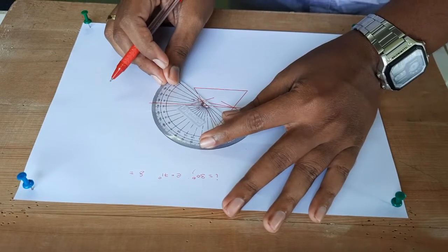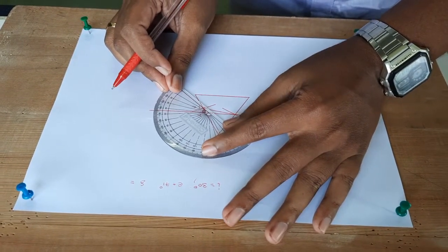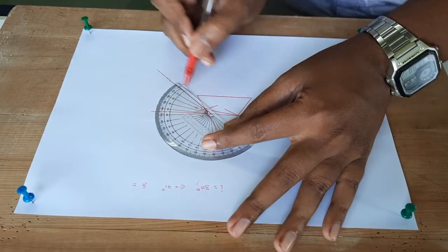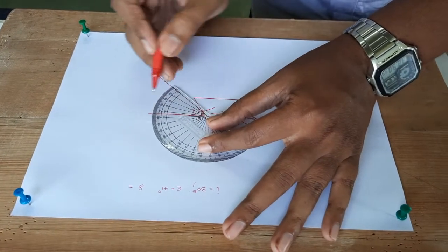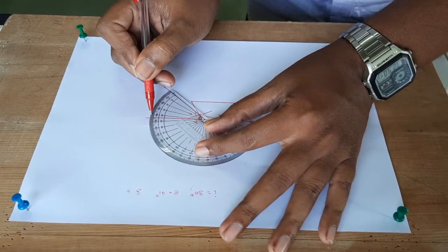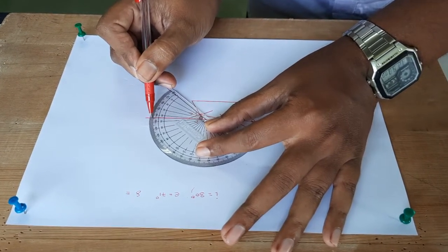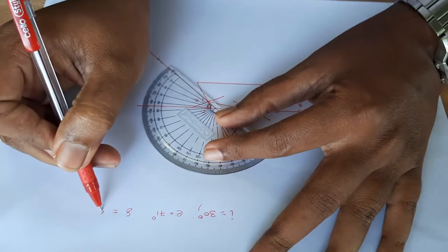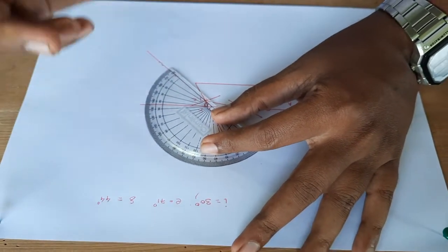Now measure angle of deviation. For angle of deviation you can make this as a base and then measure the angle. So this is between 40 and 50, and if you see it carefully here in this case this is 44 degrees. So angle of deviation is 44 degrees.